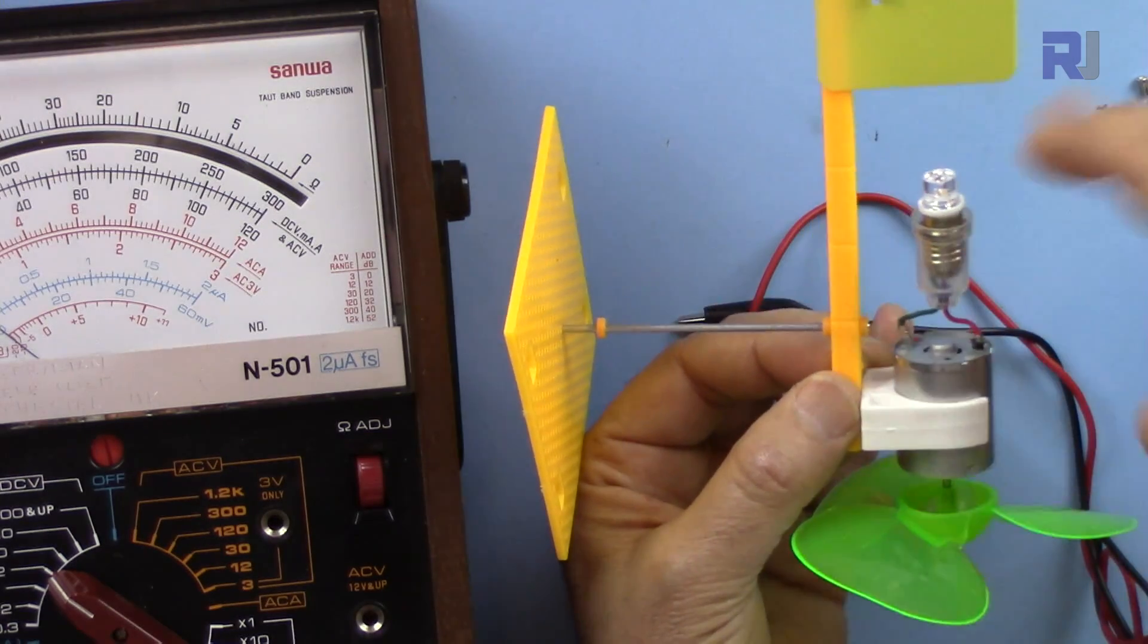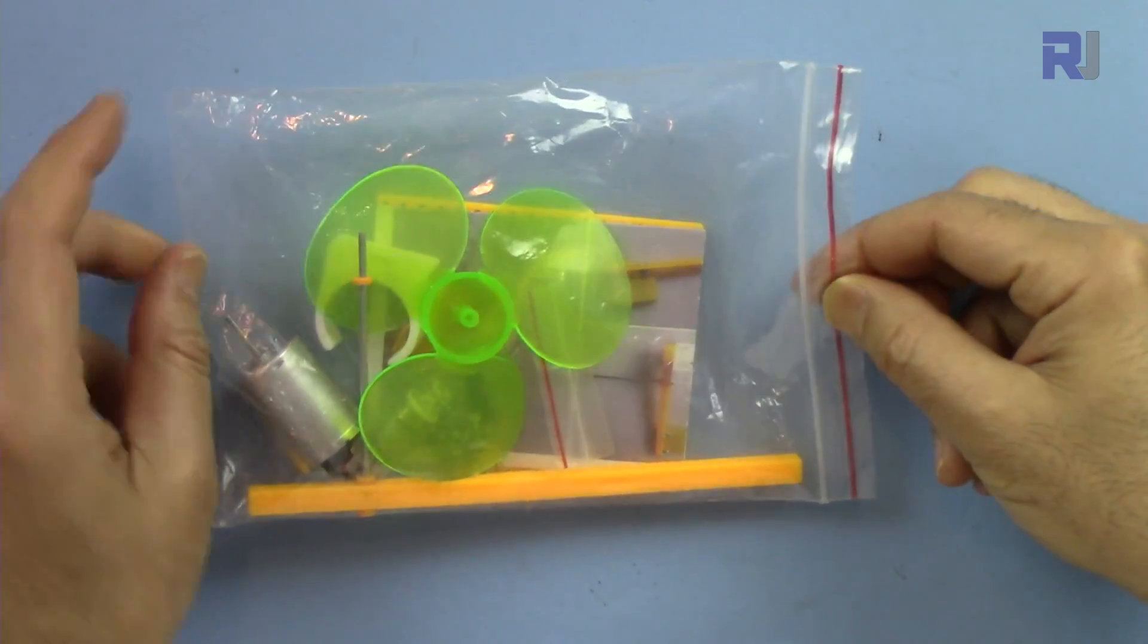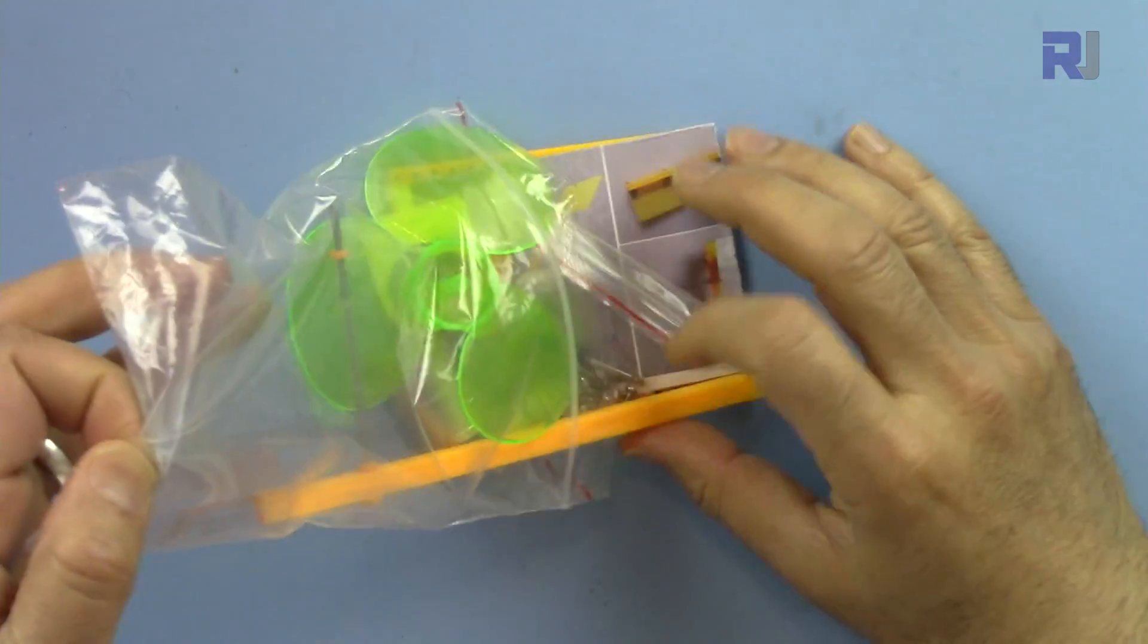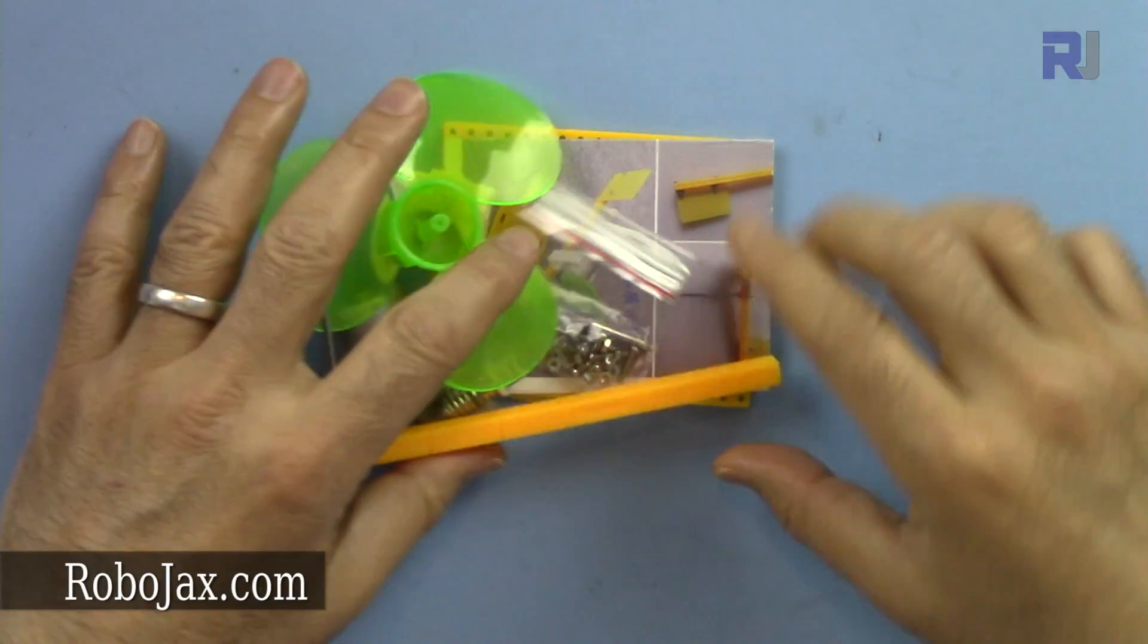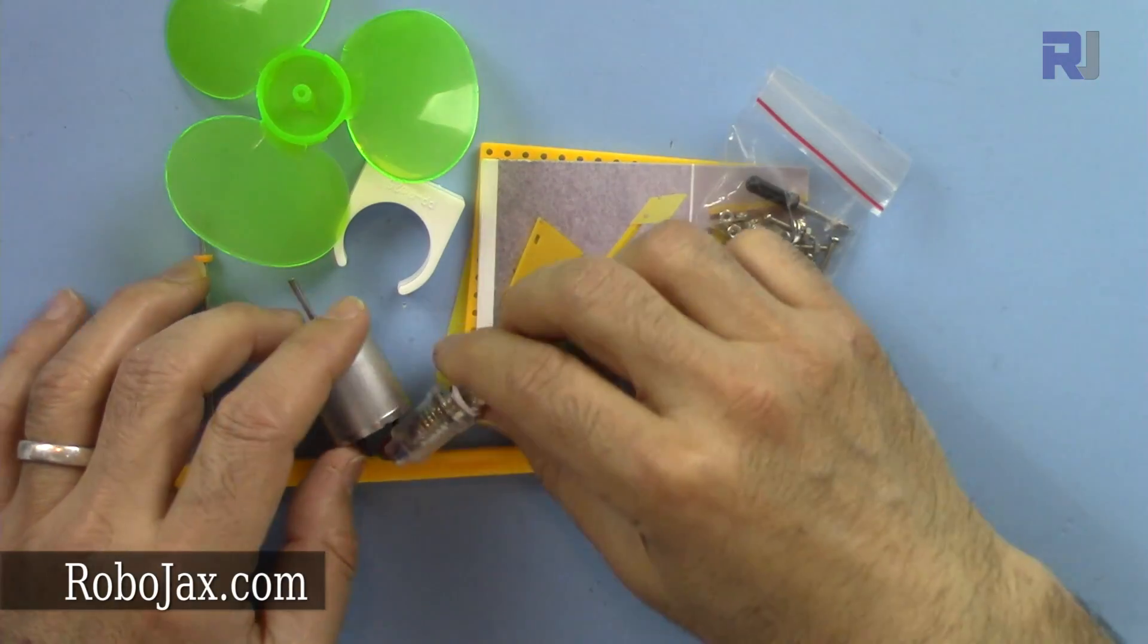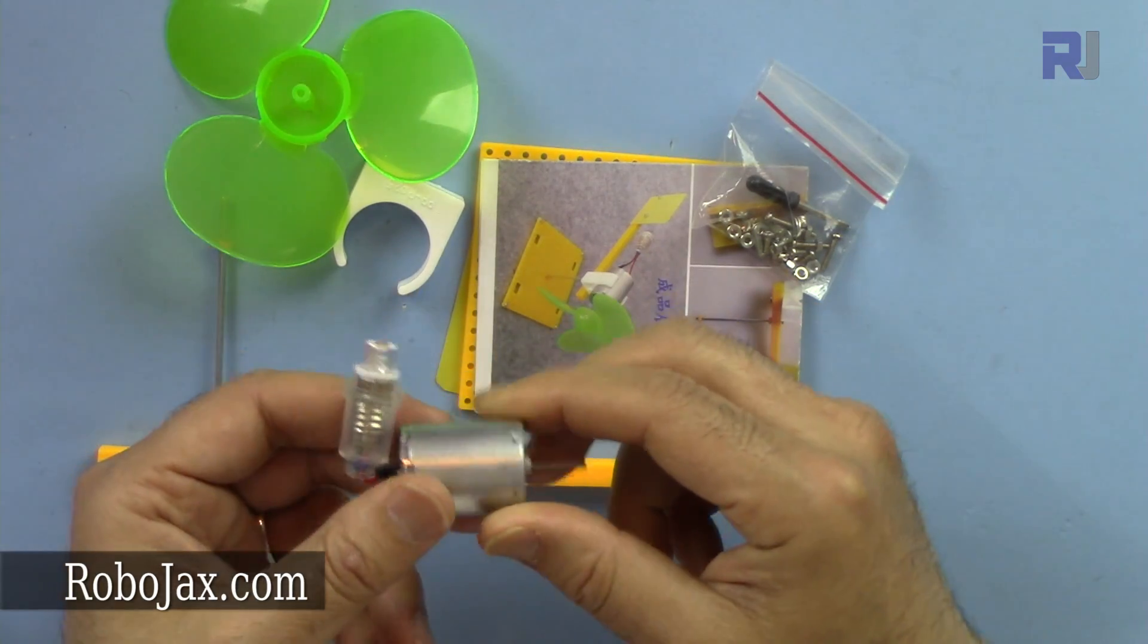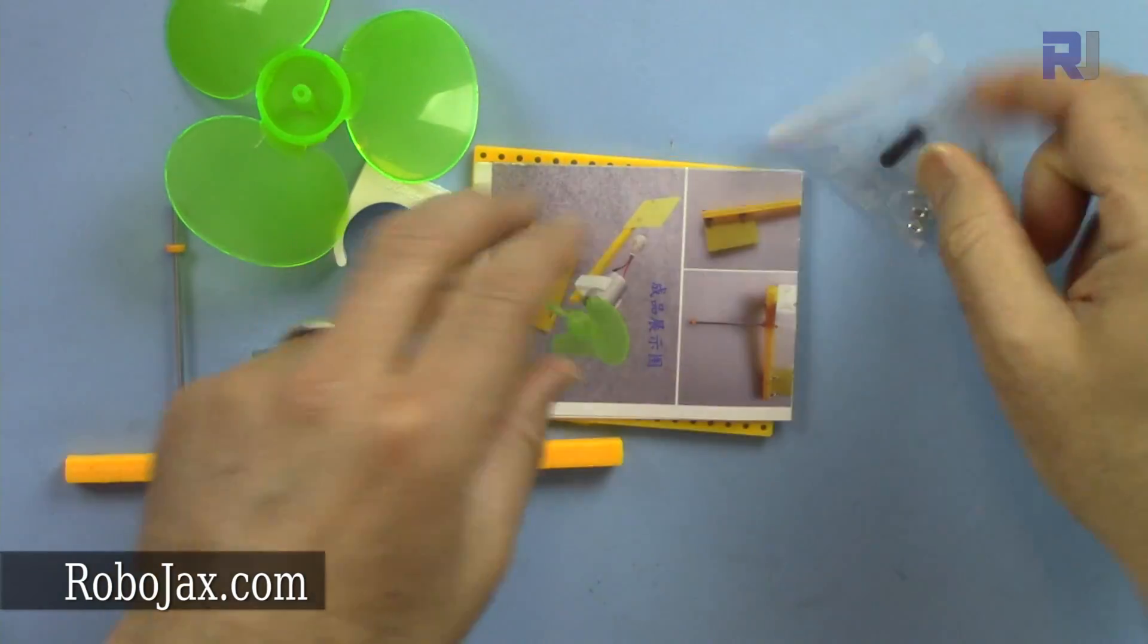This is the package that I've received, so let's see what is inside this package. We have these parts: the DC motor with attached bulb, some hardware with a tiny screwdriver here.